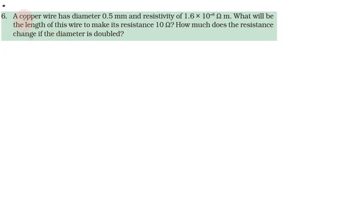Problem number 6. A copper wire has diameter 0.5 mm and resistivity 1.6 into 10 power minus 8 ohm meter. What will be the length of this wire to make the resistance of 10 ohm? How much does the resistance change if the diameter is doubled?